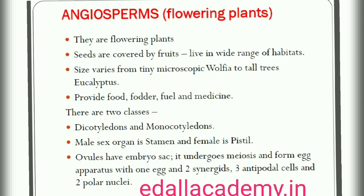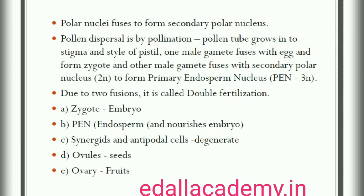The male sex organ in a flower is the stamen. Each stamen consists of a slender filament with an anther at the tip; the anthers, following meiosis, produce pollen grains. The female sex organ in a flower is the pistil or carpel. The pistil consists of an ovary enclosing one to many ovules. Within ovules are present highly reduced female gametophytes termed embryo sacs; embryo sac formation is preceded by meiosis. Each cell of an embryo sac is haploid. Each embryo sac has a 3-celled egg apparatus (1 egg cell and 2 synergids), 3 antipodal cells and 2 polar nuclei. The polar nuclei eventually fuse to produce a diploid secondary nucleus. Pollen grains, after dispersal from the anthers, are carried by wind or various other agencies to the stigma of a pistil — this is termed pollination. The pollen grains germinate on the stigma and the resulting pollen tubes grow through the tissues of stigma and style and reach the ovule.